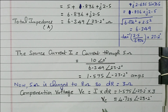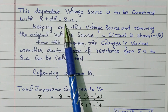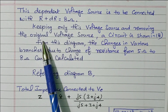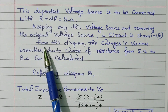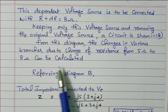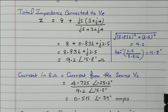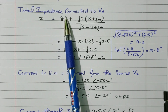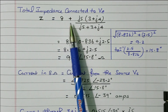Next, we need to find the current flowing through the 3 plus J4 ohm branch. For that, we refer to network B. The compensation voltage source is connected in series with the 8 ohm resistor. The original source is removed, and only the compensation voltage is connected. Now referring to diagram B, we again need to calculate the total impedance. In diagram B, the 5 ohm is now 8 ohm — that is the only change. This combination remains the same.